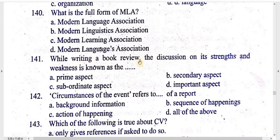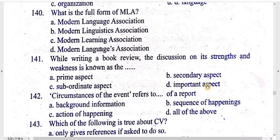While writing a book review, the discussion on its strength and weakness is known as the: prime aspect, secondary aspect, subordinate aspect, important aspect.